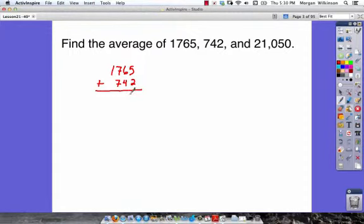5 plus 2 is 7. 6 plus 4 is 10. We'll carry that 1. 1 plus 7 is 8. 8 plus 7, that's going to give us 15. We'll carry that 1. 1 plus 1 is 2. We have 2,507. Let's add 21,050 to that.